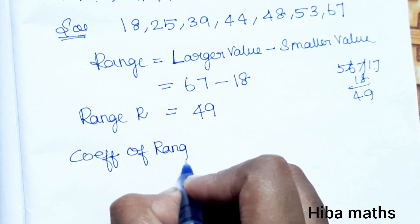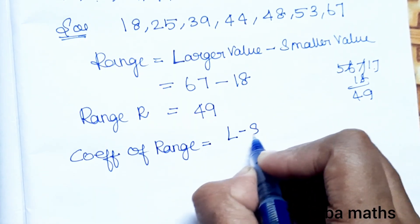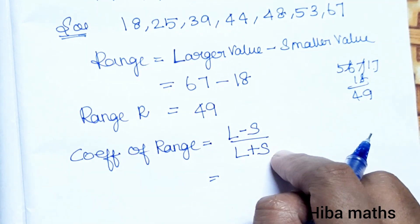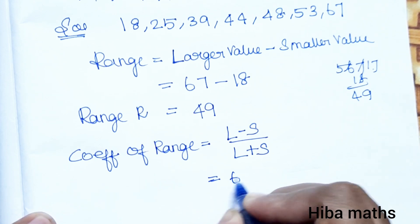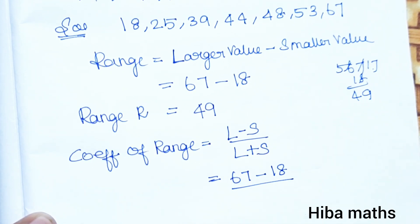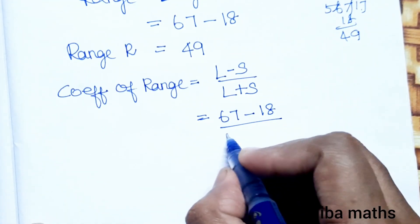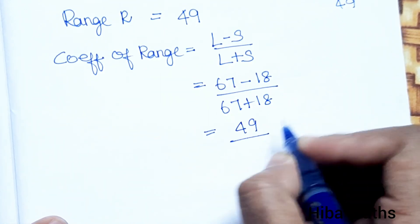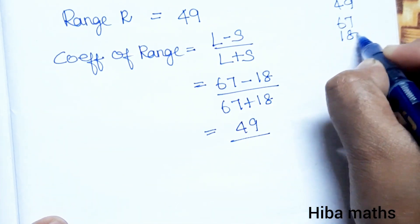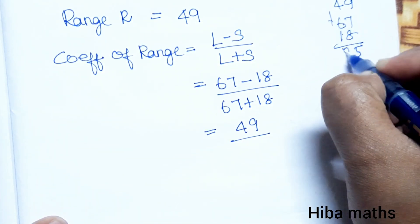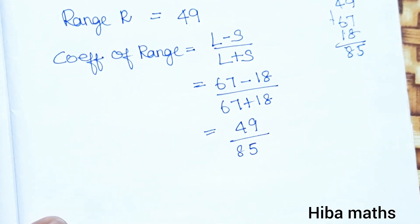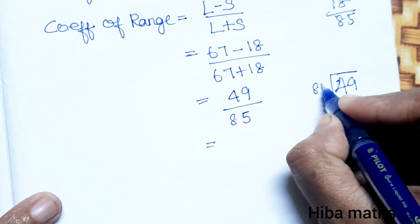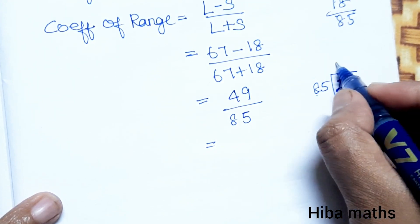Now we will try to get the coefficient of range. The coefficient of range is calculated from the relationship between the larger and smaller values of the data set.